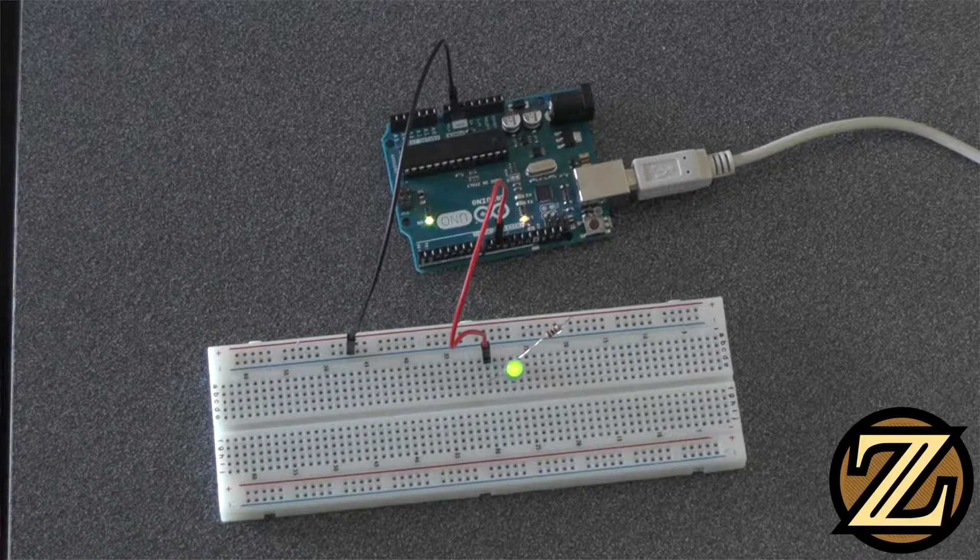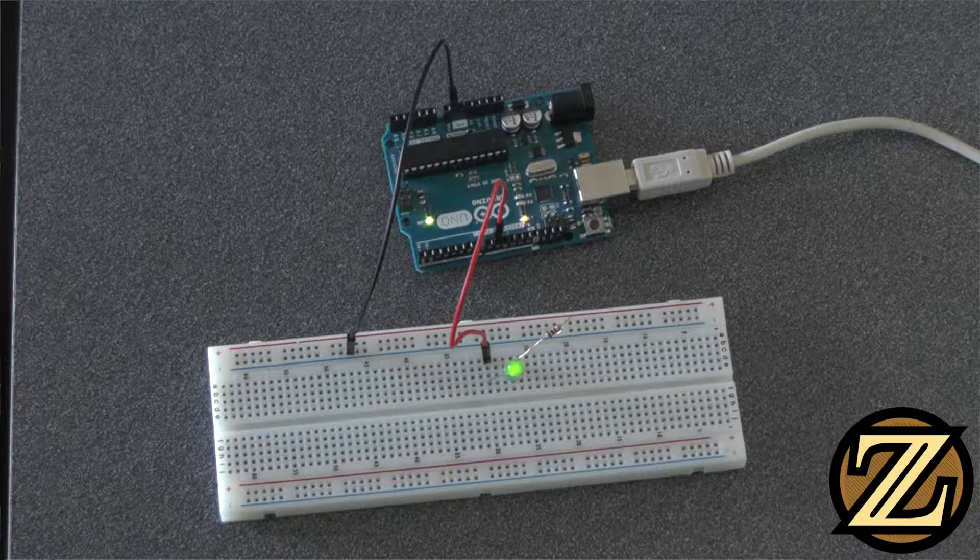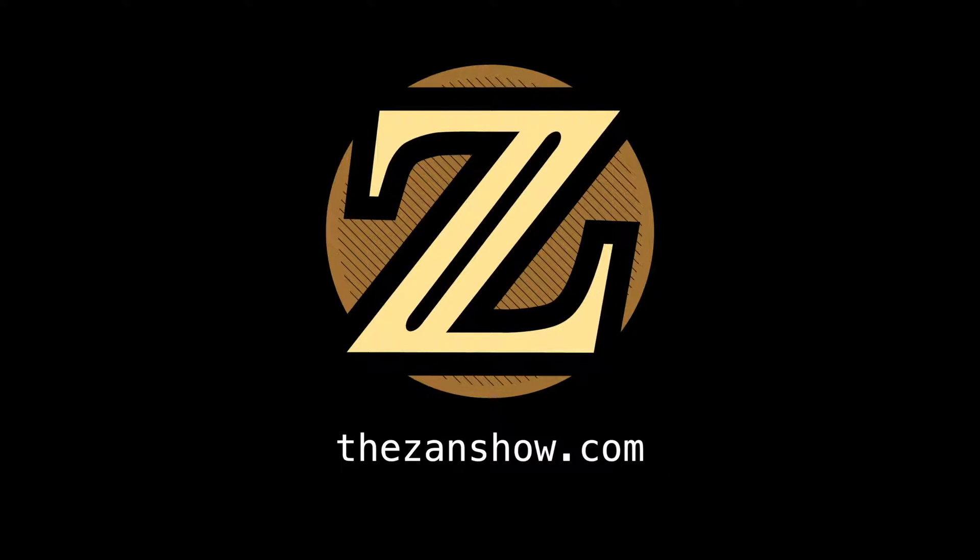So there you have it, how to control the intensity of an output using an Arduino UNO. I hope you enjoyed this tutorial. For more tutorials like this visit thezanshow.com.